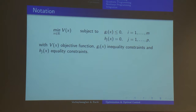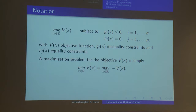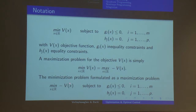Here is the notation: the objective function is what we want to minimize, subject to constraints, with our variable in some domain. We can jump between maximization and minimization problems by changing the sign — minimizing V is the same as maximizing the negative of V. To rewrite a minimization as a maximization, we simply put a minus sign in front of the objective function; the constraints remain the same.